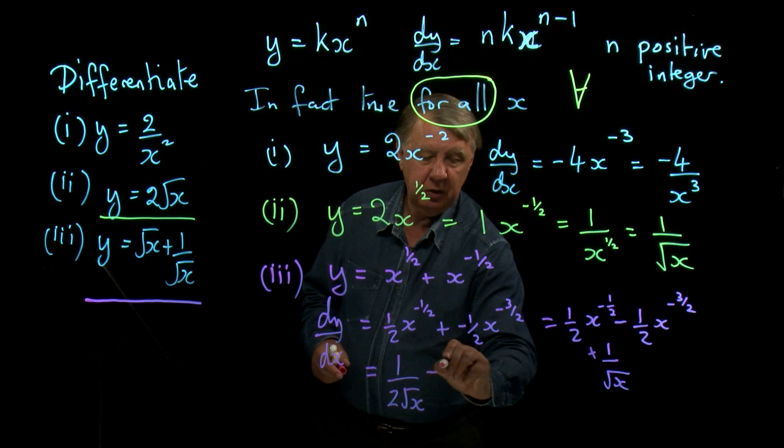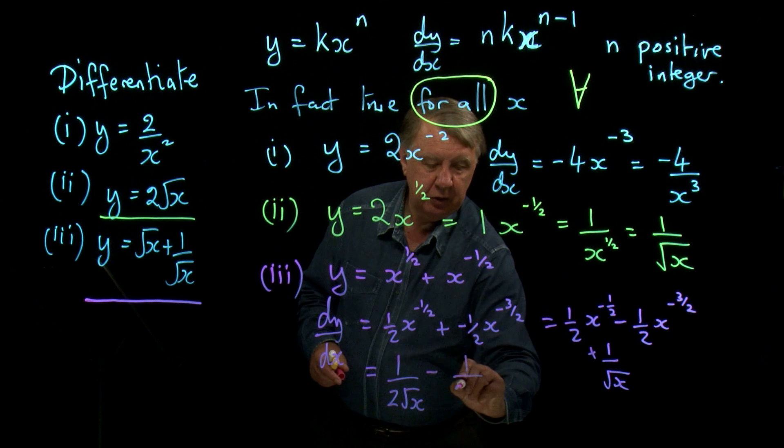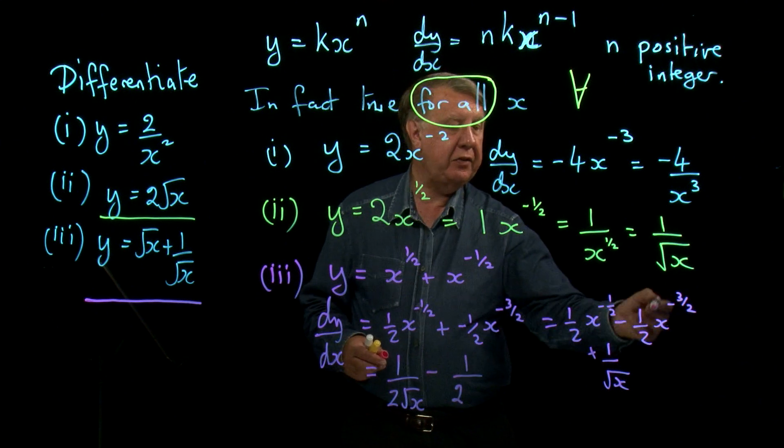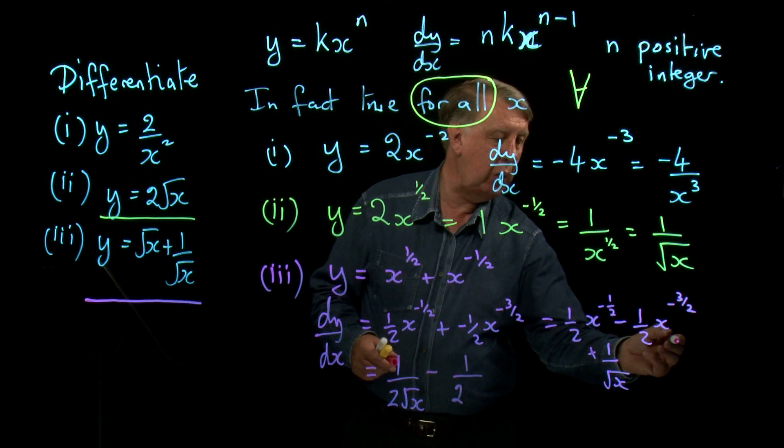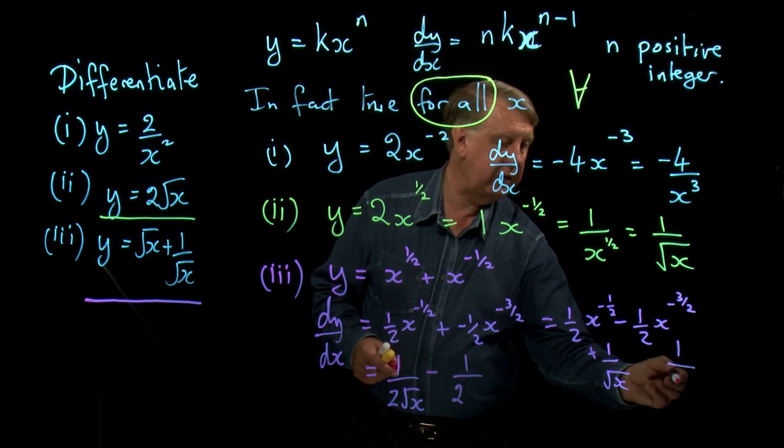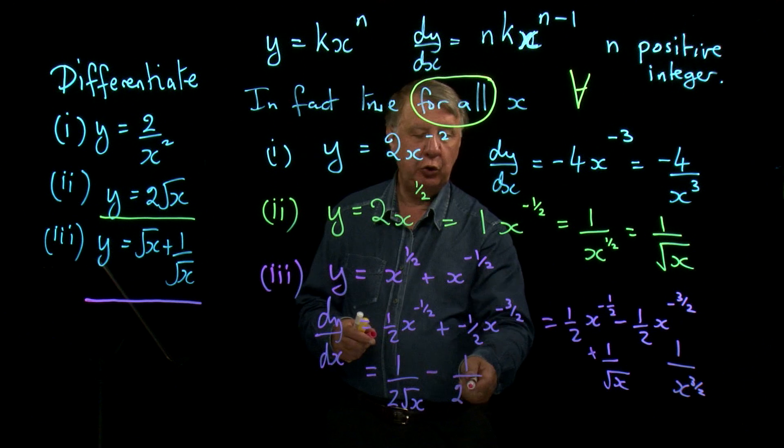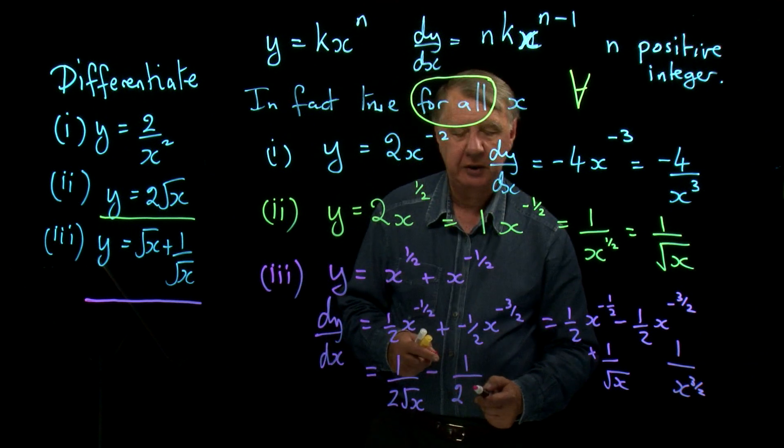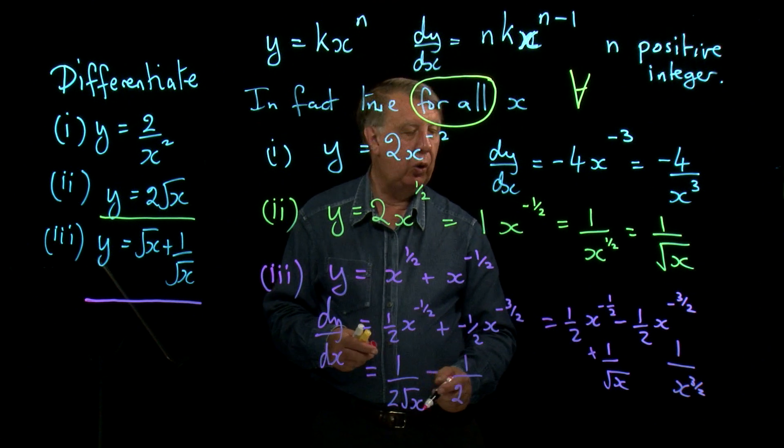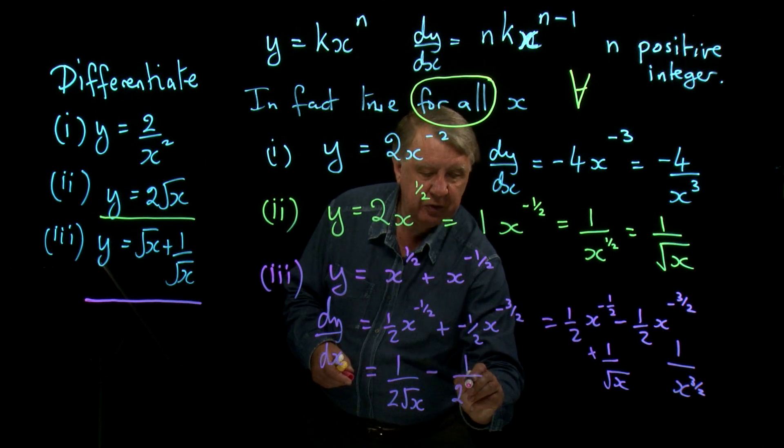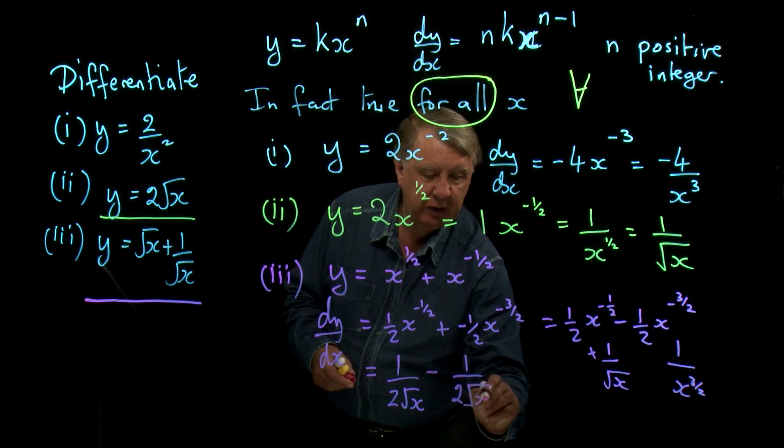Now this one here, minus 1 over 2. Now, x to the minus 3 over 2 is of course 1 over x to the 3 over 2. So you could put 2x to the 3 over 2 on the bottom line. Or, you could put the square root of x cubed.